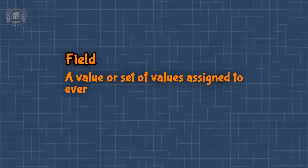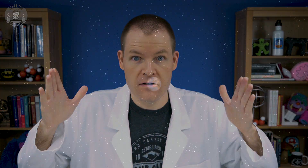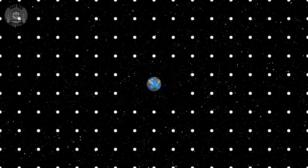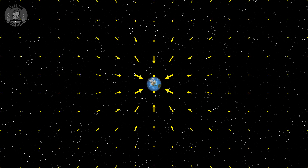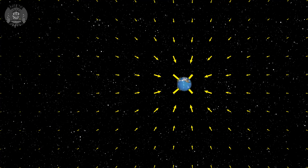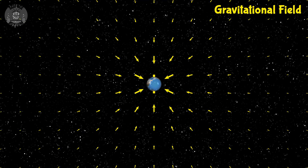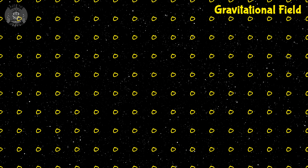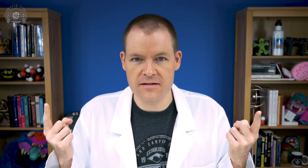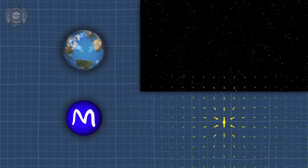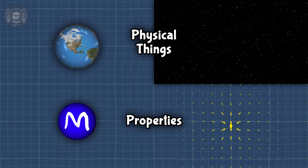You can't really understand one without understanding the other. A field is a value or set of values assigned to every point in space. But jumping right into the EM field could be overwhelming, so let's start with gravity — it's a little easier to imagine. Here's the Earth, just chilling. Around the Earth is a bunch of points in space, and every single one of those points has a vector arrow attached to it. Since the Earth is pretty massive, it has a lot of control over those arrows. The whole collection of arrows is called a gravitational field, and it's always there — even if there isn't any mass around, the field is still there; it's just zero. It helps to think of mass as a property of objects and fields as a property of space.